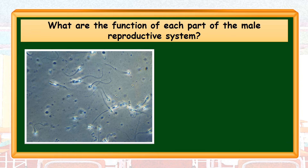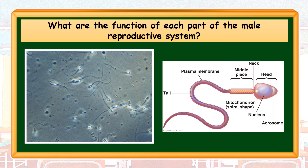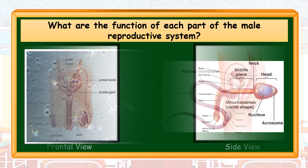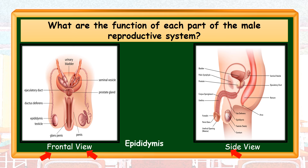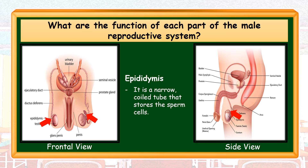This is the picture of sperm cells under the microscope, and this shows its basic parts. Epididymis — it is a narrow coil tube that stores the sperm cells.